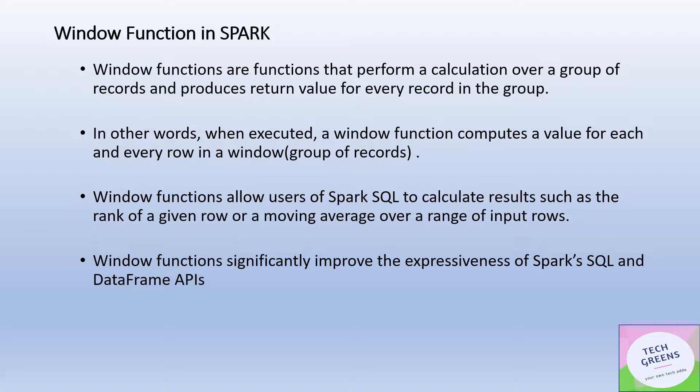In a very simple definition, window functions are like any other operations or calculations. The only difference is that we can apply a window function over a group of records and produce return values for each and every row in that group. They are different from group-based aggregate functions, which also operate on a group of records but produce one single return value for all records — like summation or average.